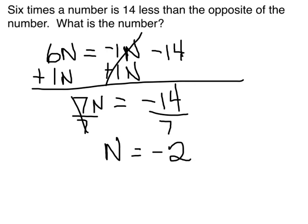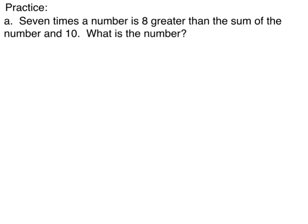Okay, let's work our two practice problems. 7 times a number is 8 greater than the sum of the number and 10. All right, a little more words here, but we take it one step at a time. 7 times a number is 7N is 8 greater than. So we're going to add 8 to something. What are we going to add? The sum of the number and 10.